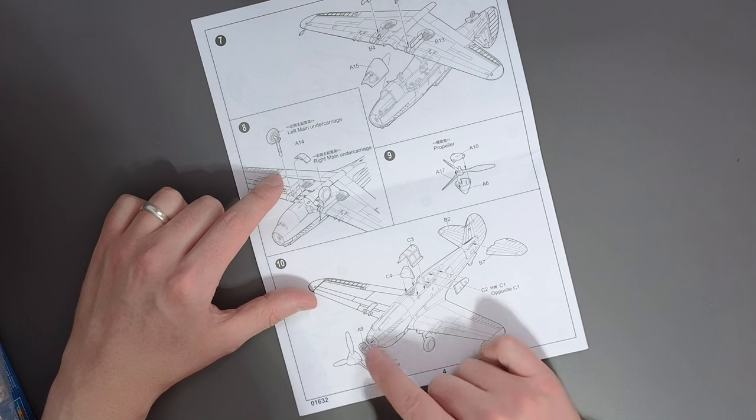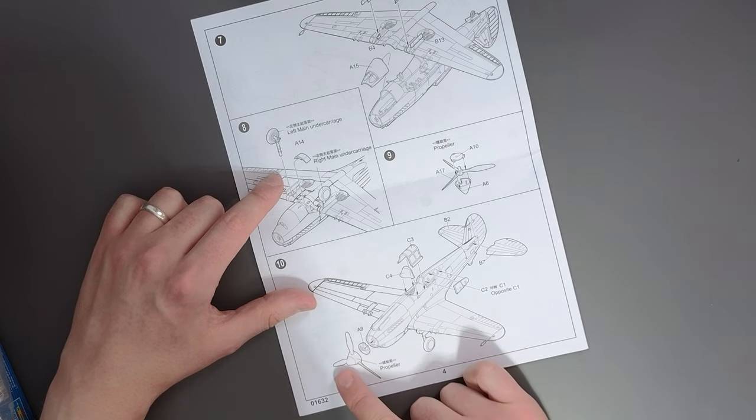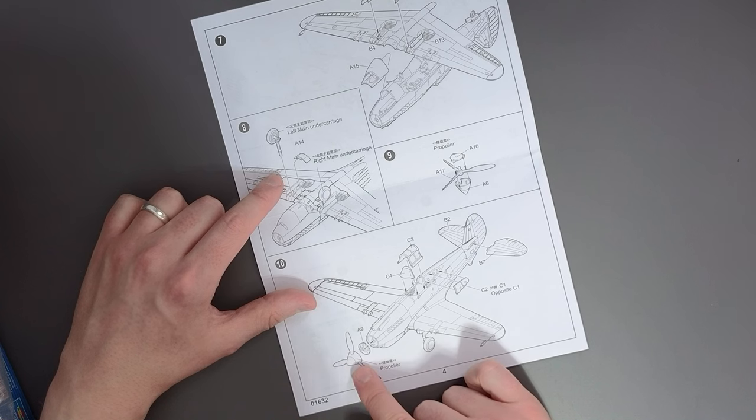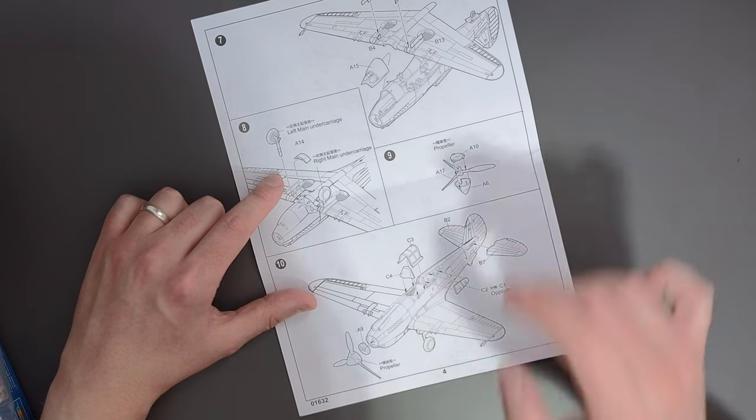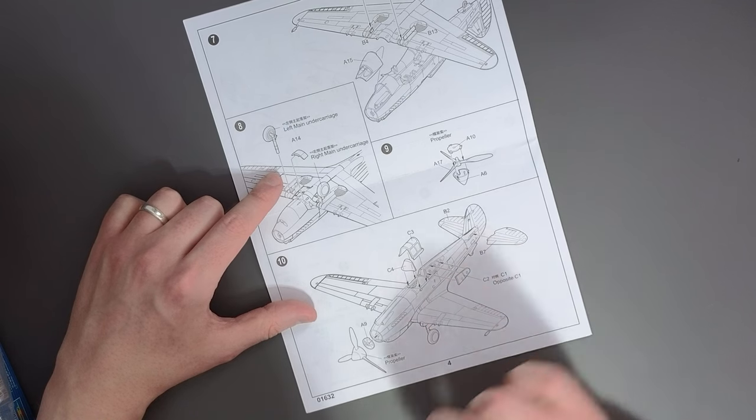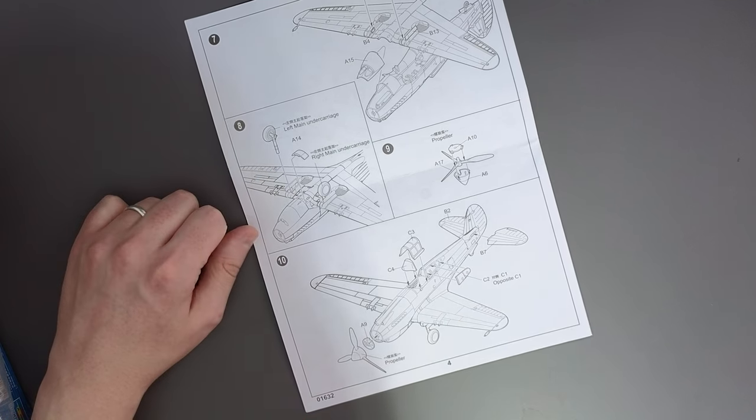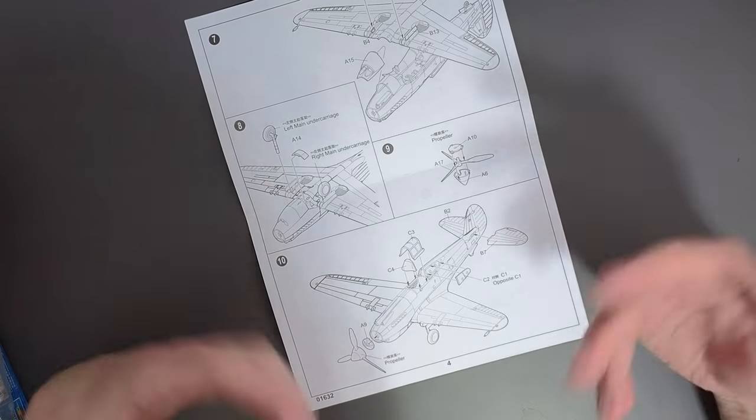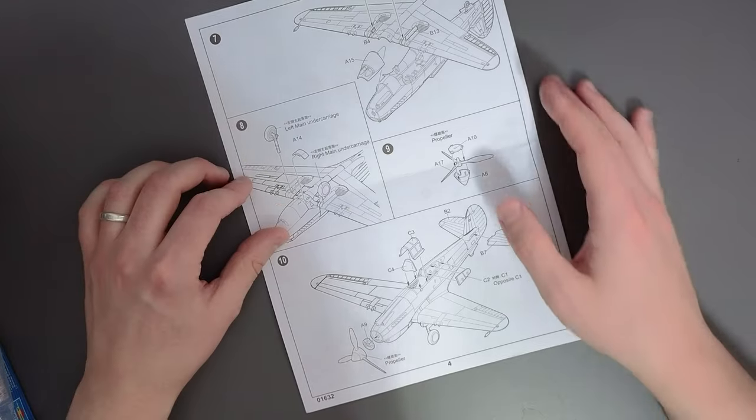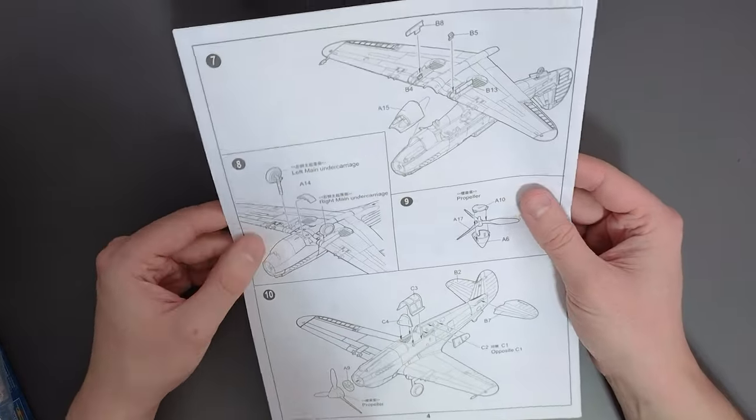We assemble our propeller by joining the spinner and the backing plate and sandwiching over the top and then we install that to the aircraft. But before we do that we have to put on this part here. However it makes no indication that this is going to be a rotating propeller. We have a two-part front of the cockpit and then we've got our side windows as well. And we also need to add on our tail surfaces. So not an overly complicated kit. Instructions are relatively easy to follow and I don't think there'll be any issues with that.